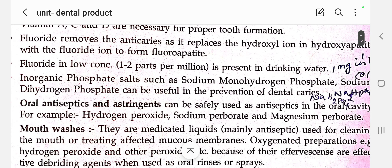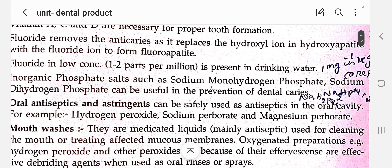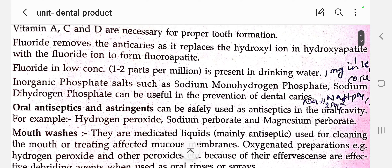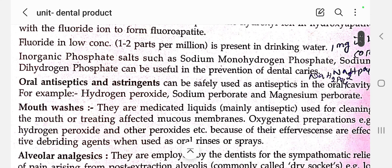Some inorganic phosphates like sodium monohydrogen phosphate and sodium dihydrogen phosphate are also useful in the prevention of dental caries, similar to fluoride. The inorganic substances in the form of fluoride used for dental products include sodium fluoride and stannous fluoride.